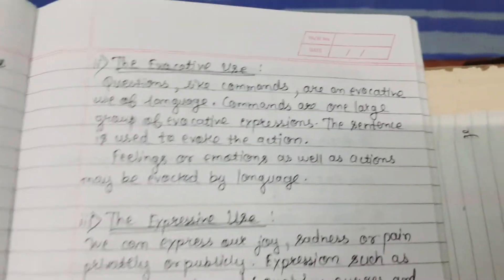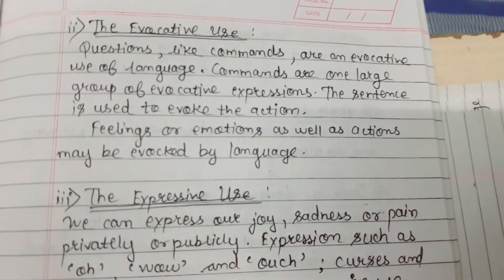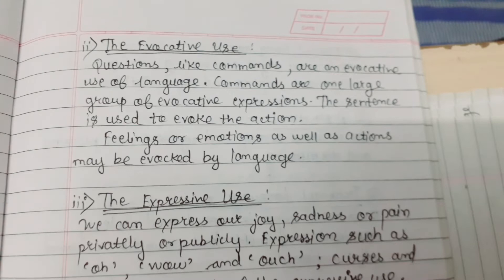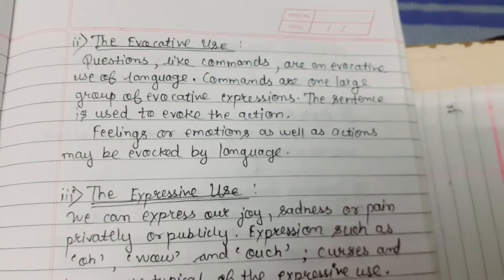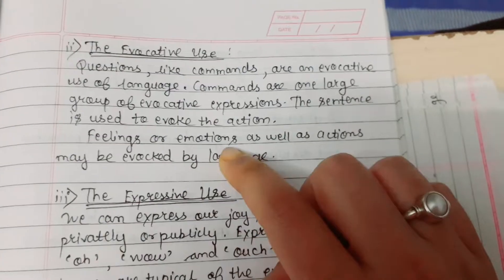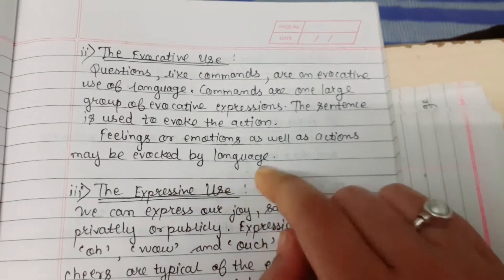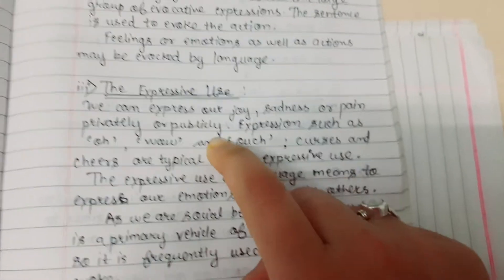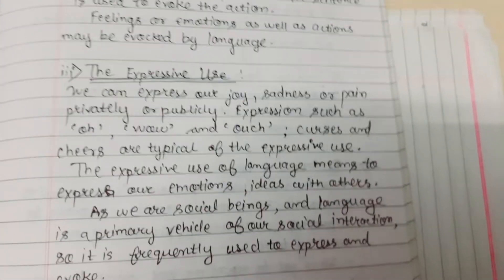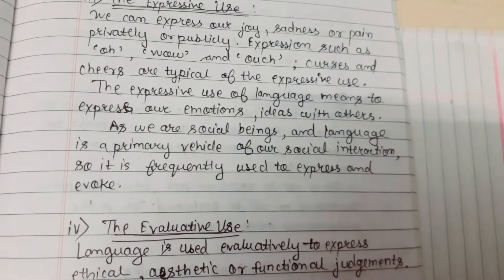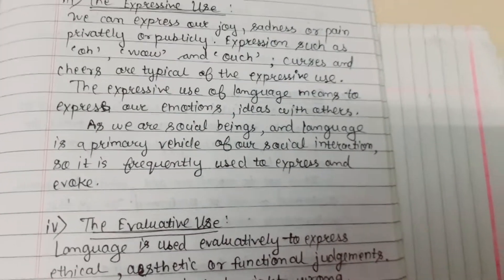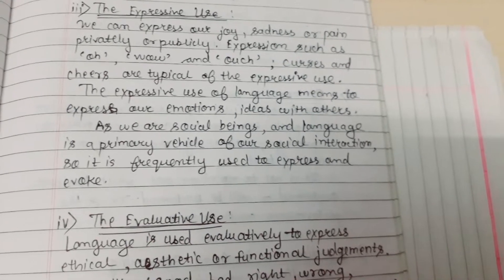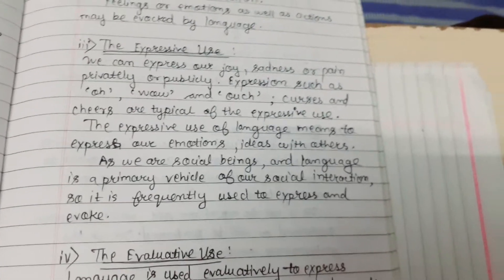The second is evocative use. Evocative means questions and commands are an evocative use of language. Commands are one large group of evocative expressions. The sentence is used to evoke action. Feelings or emotions as well as actions may be evoked by language. Third is expressive use — we can express our joy, sadness, or pain privately or publicly. Expressions such as 'oh,' 'wow,' 'ouch,' curses, and cheers are typical of the expressive use. The expressive use of language means to express our emotions and ideas with others.